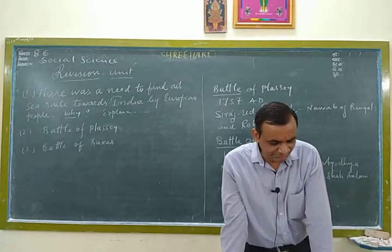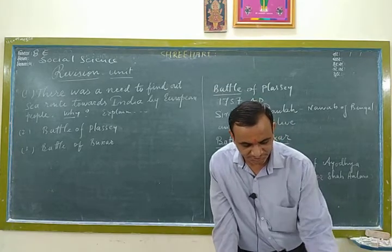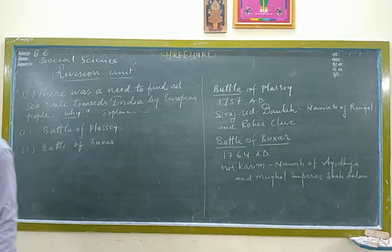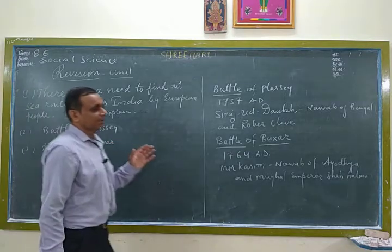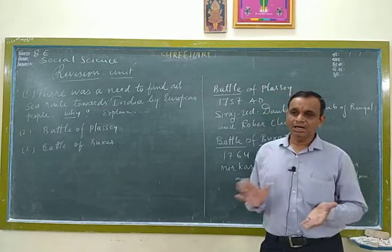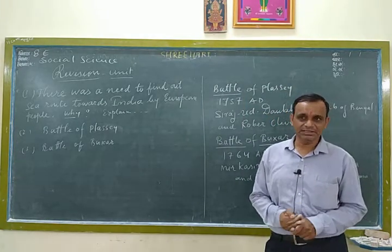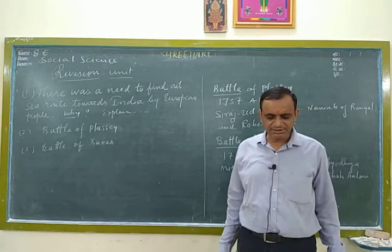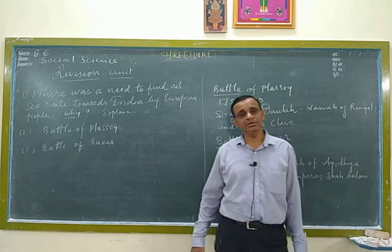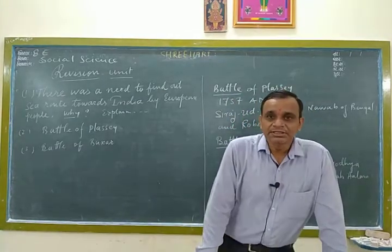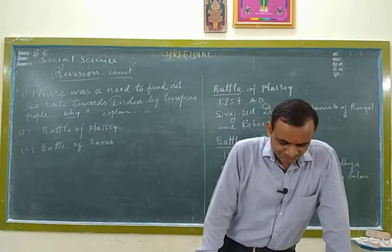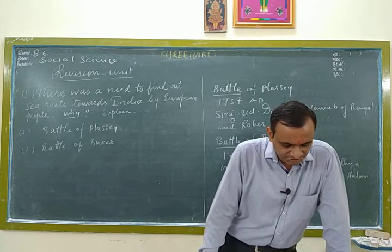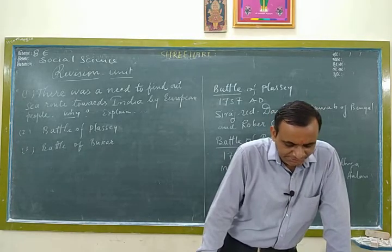These merchants came to India from north-western boundaries by land route, and after buying Indian commodities they returned. Now, there was a big center called Constantinople.